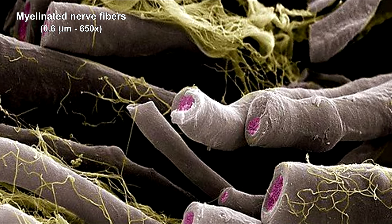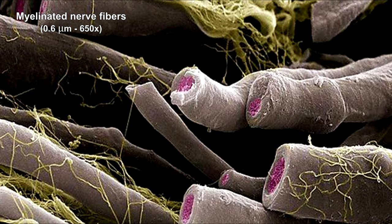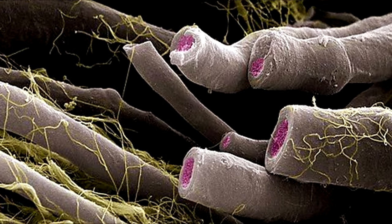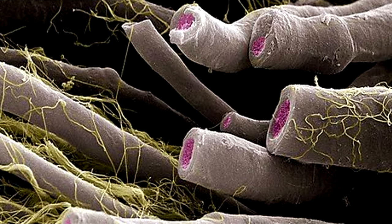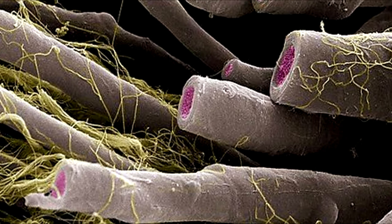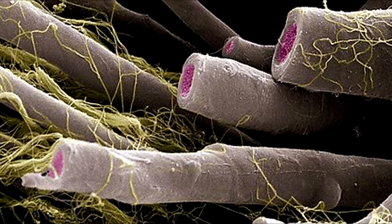A nerve fiber is a thread-like extension to a nerve cell. Here's a colored scanning electron micrograph of myelinated nerve fibers. The myelin sheath is gray, the nerve inside is pink, and the connective tissue is yellow.